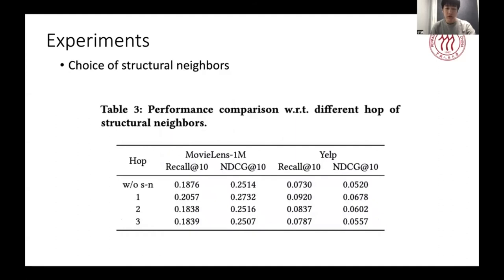To investigate the impacts of different structural neighbors, we select the nodes in one, two, and three-hop as the structural neighbors and test the effectiveness. We find that the results of the first even layer are the best among these variants. This accords with the intuition that users or items should be more similar to their direct neighbors than indirect neighbors.